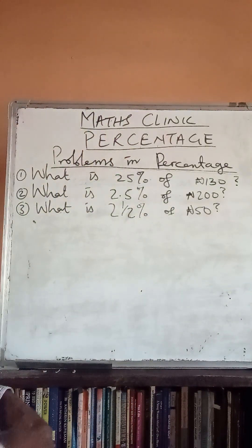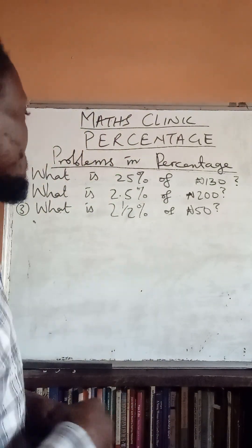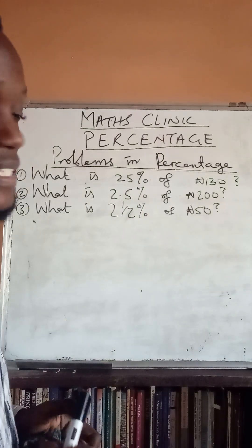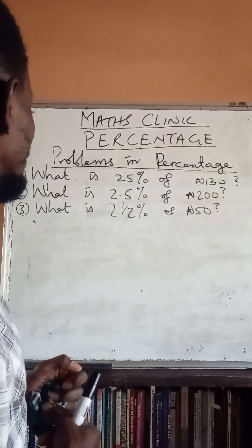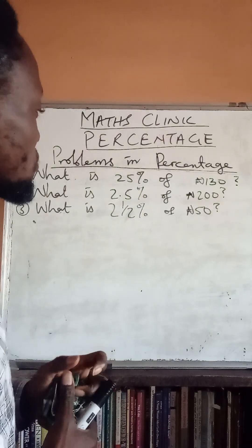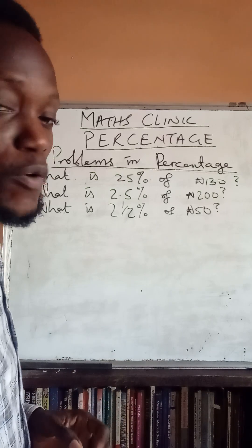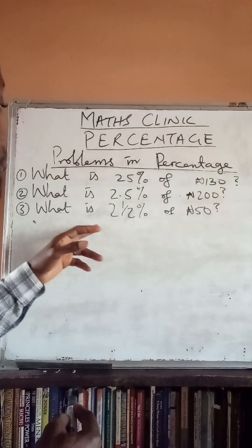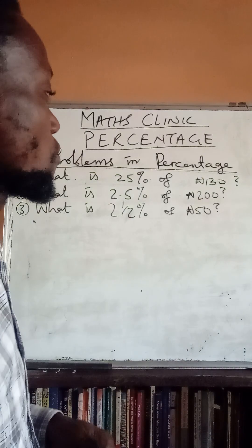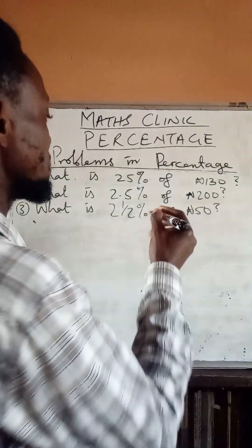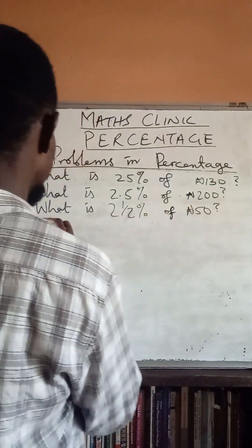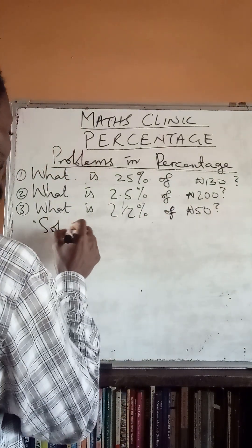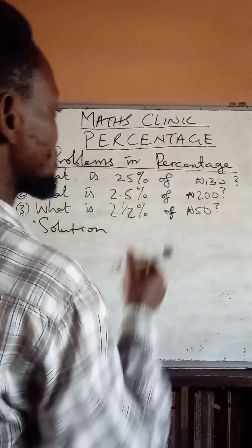Problems in percentage. Number one: what is 25% of 130 naira? Number two: what is 2.5% of 200 naira? Number three: what is two and a half percent of 50 naira? Here is the solution. Number one: 25 percent...